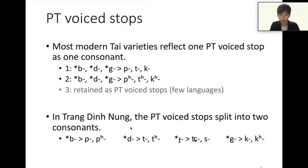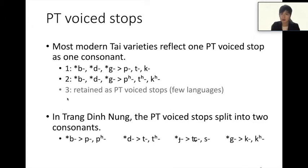Most modern Thai varieties can be classified into three types from the perspective of how prototype voiced stops developed. Type 1: prototype voiced stops became simple voiceless stops. Type 2: they became aspirated stops. Type 3: they were retained as voiced stops. Only a few modern Thai varieties belong to Type 3; prototype voiced stops are devoiced in most modern Thai varieties.